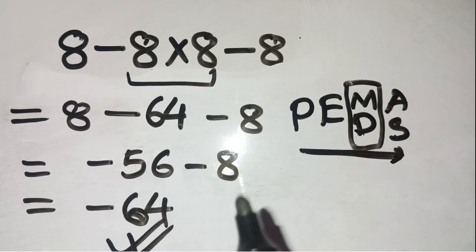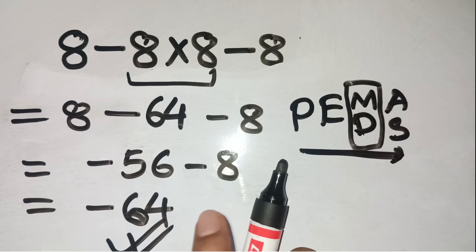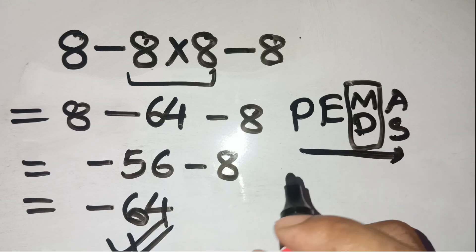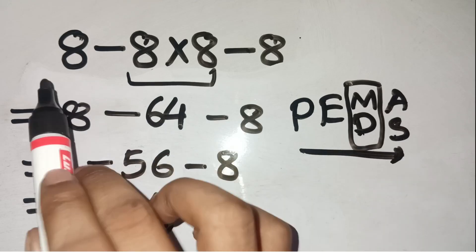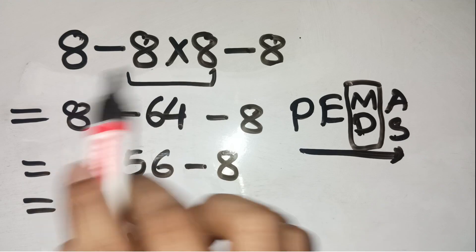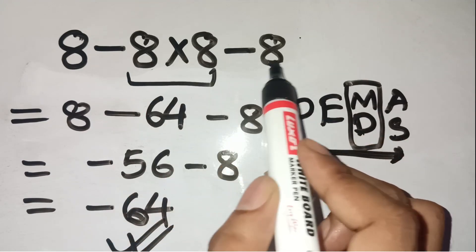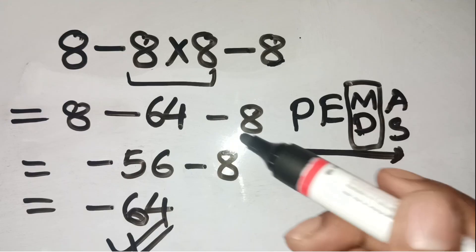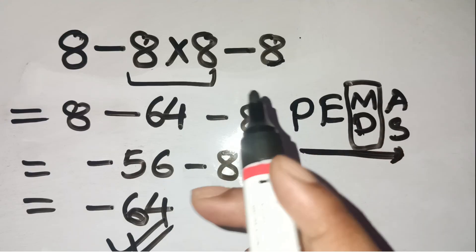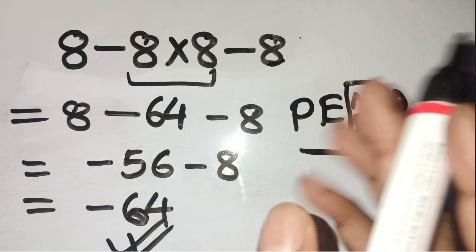Yep, a little misunderstanding of the order of operations can completely flip your answer. If you don't believe it, try typing it on your calculator, just as it is. 8 minus 8 times 8 minus 8, and you'll get negative 64. And if you still have doubts, drop your thoughts in the comments.